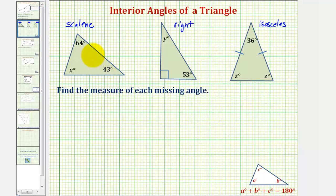So looking at our first example, x plus forty-three plus sixty-four must equal one hundred eighty. Notice how we're leaving the degrees off in our equation because we already have a degree symbol on the variable x. So now we'll solve this for x.